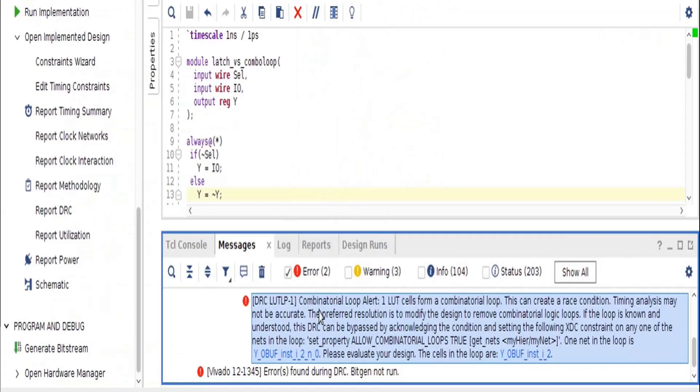For this logic, Vivado is giving an error that combinational loop alert. One LUT cell forms a combinational loop and this can create a race condition. Timing analysis may not be accurate, but in case of latch it was just giving a simple warning.